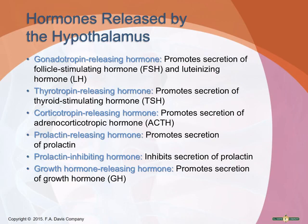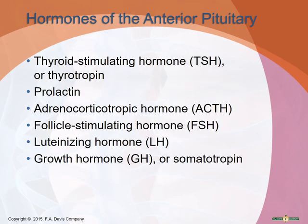The hypothalamus releases several different hormones, each acting on the anterior pituitary to either release or inhibit a particular hormone. For example, thyrotropin-releasing hormone stimulates the anterior pituitary to release thyroid-stimulating hormone, which then goes to the thyroid and stimulates it to secrete its hormone. You will need to know the action of these hormones and that they come from the hypothalamus.